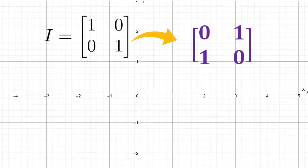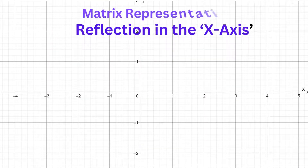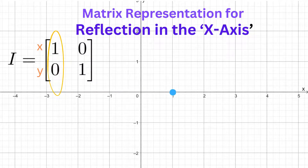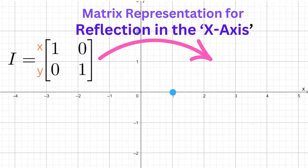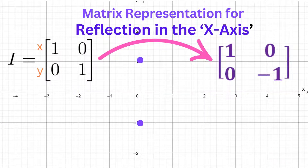Each transformation has its own matrix. We will begin with the matrix transformation of a reflection in the x-axis. We'll get the reflection matrix by tweaking the identity matrix. The values in the first column represent the point (1, 0). Reflect this point in the x-axis, and it remains as it is, so the first column in the transformation matrix will be (1, 0). The second column represents the point (0, 1). Reflect that in the x-axis, and we get (0, -1), so the second column in the transformation matrix is (0, -1).